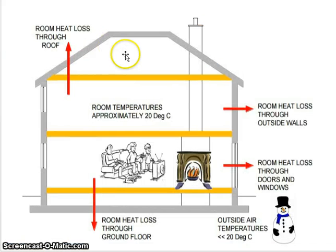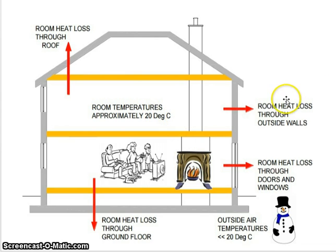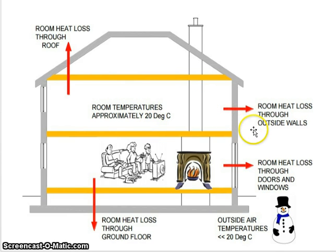In the diagram, you can see heat loss through roof and heat loss through outside walls. Room temperature is approximately 20 degrees centigrade. When outside temperature is less than 20 degrees centigrade, the outside is cool and inside is warm, so heat transfers from inside to outside. If the outside temperature is more and inside temperature is less, then heat transfers from outside to inside. This is the basic concept.